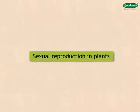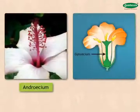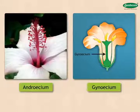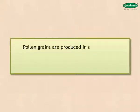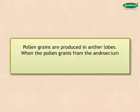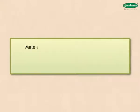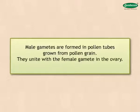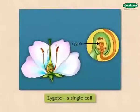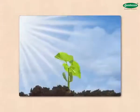Now let us move to sexual reproduction in plants. In flowering plants, flowers are the organ of reproduction. The androecium and gynoecium in the flower are important for reproduction — the androecium is the male part and gynoecium is the female part. Pollen grains are produced in anther lobes. When the pollen grains from the androecium fall on the stigma of the gynoecium, they begin to grow there — this is called pollination. Male gametes are formed in pollen tubes grown from pollen grain. They unite with the female gamete in the ovary — this union is called fertilization. A single cell called the zygote is produced from fertilization, leading to the formation of the seed and fruit. The seed takes root in the ground and a new plant grows.